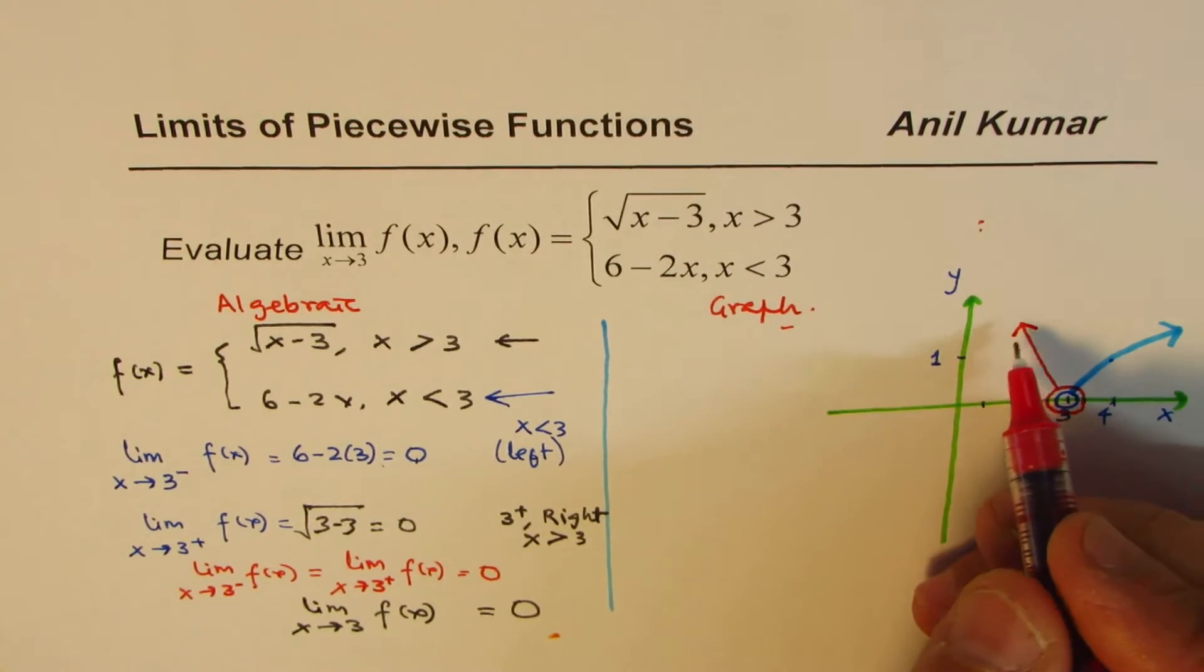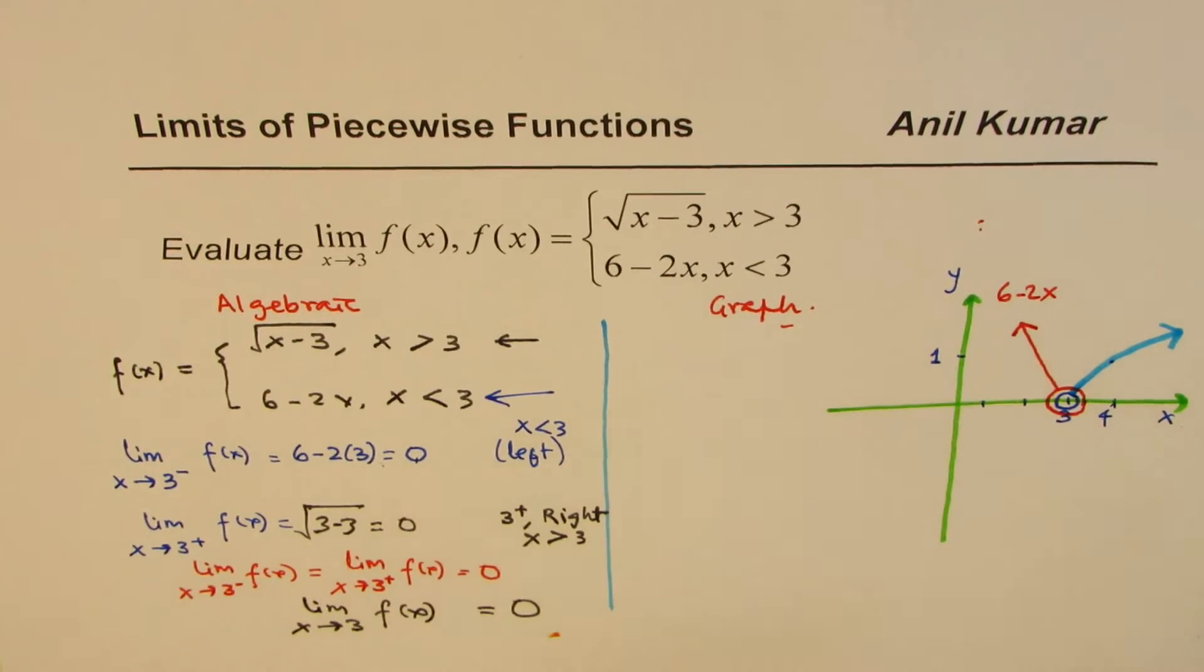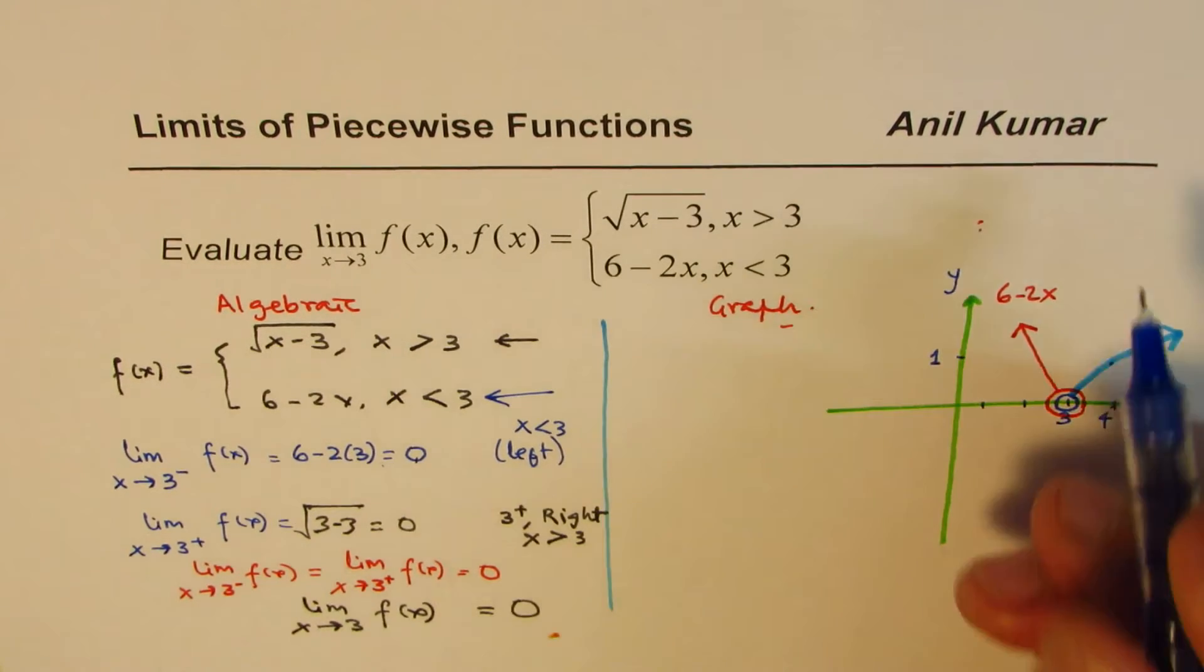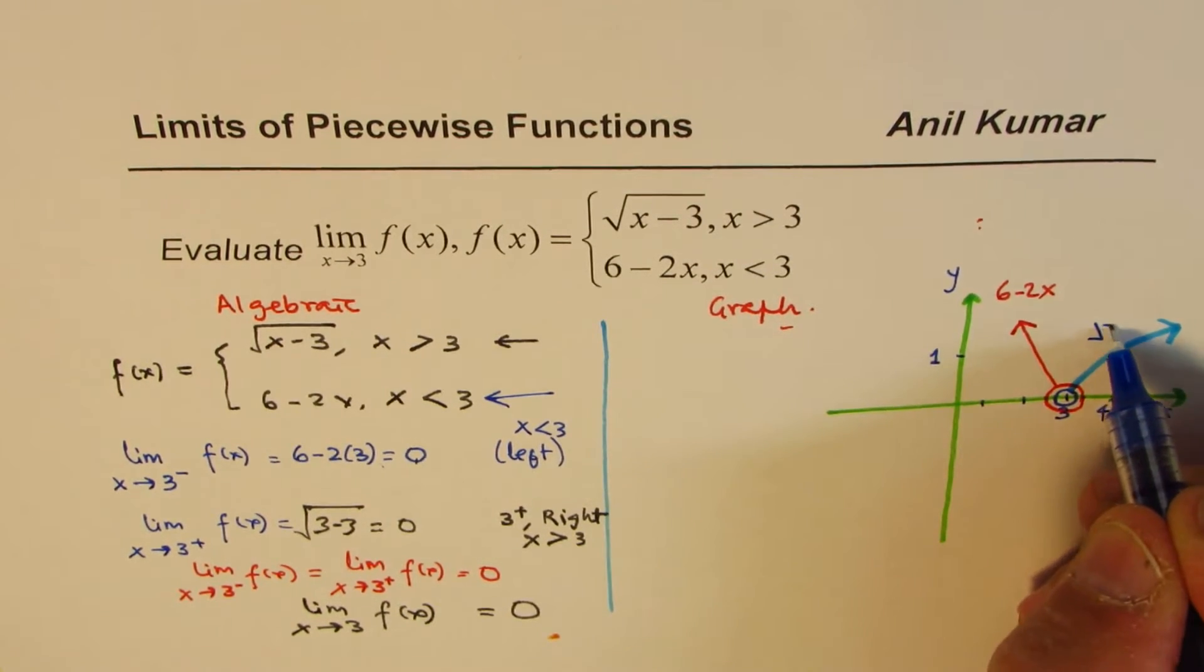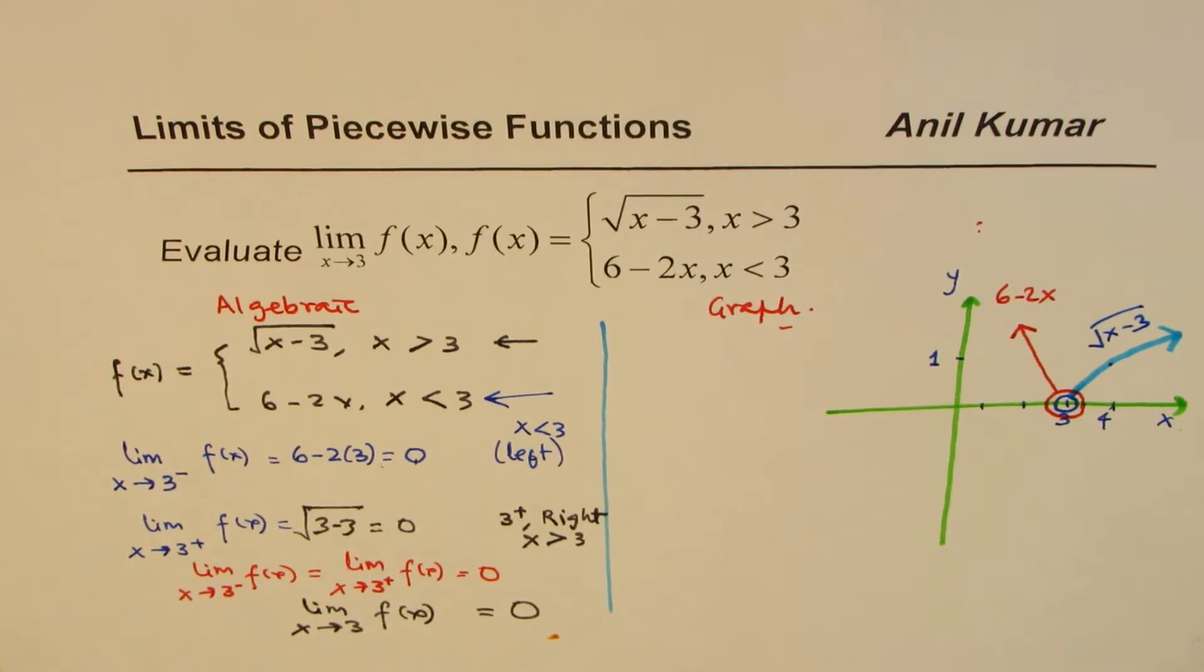So this is the 6 minus 2x part. And the other one which we've drawn is square root part, x minus 3. So that is how the function is.